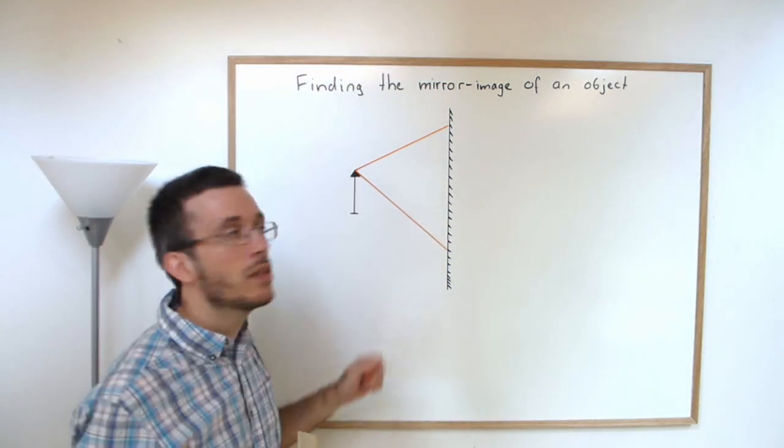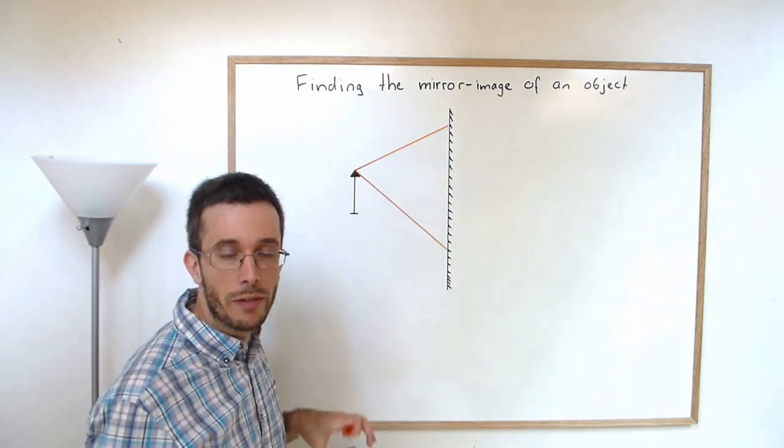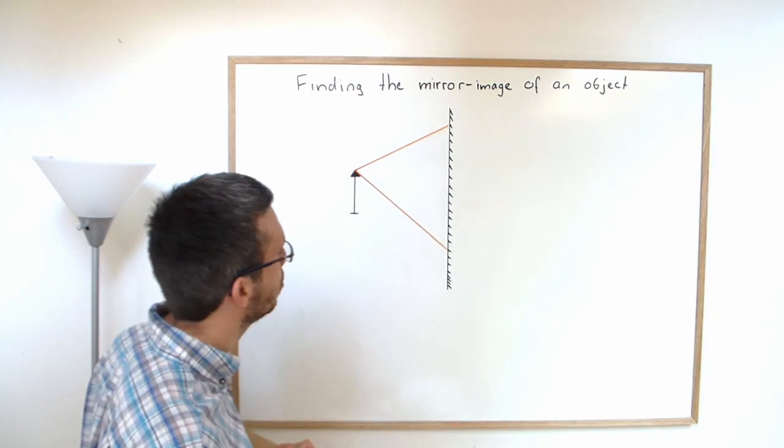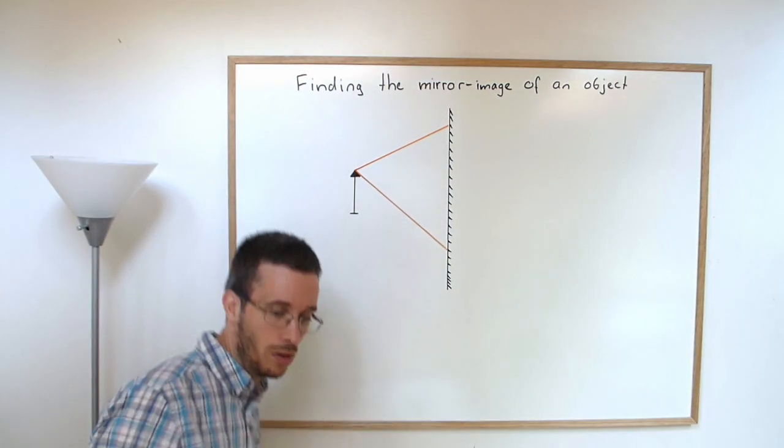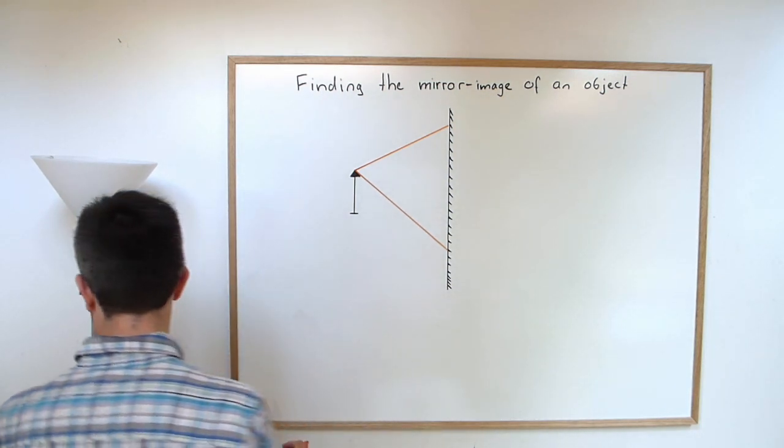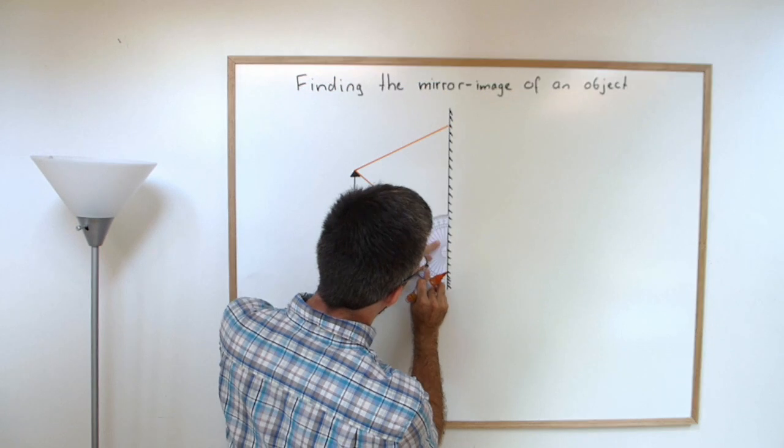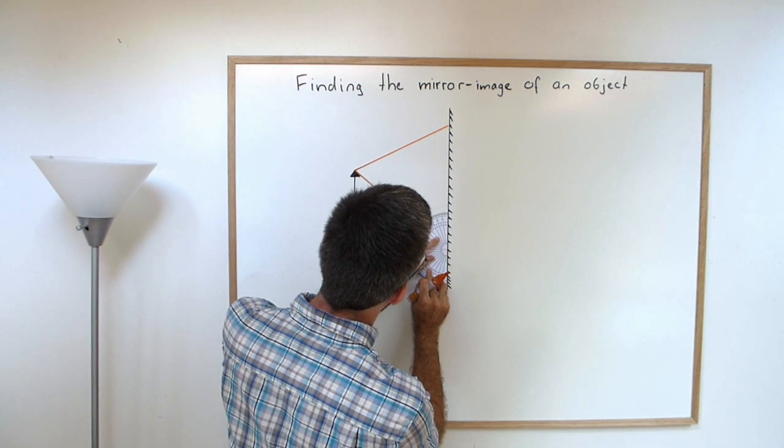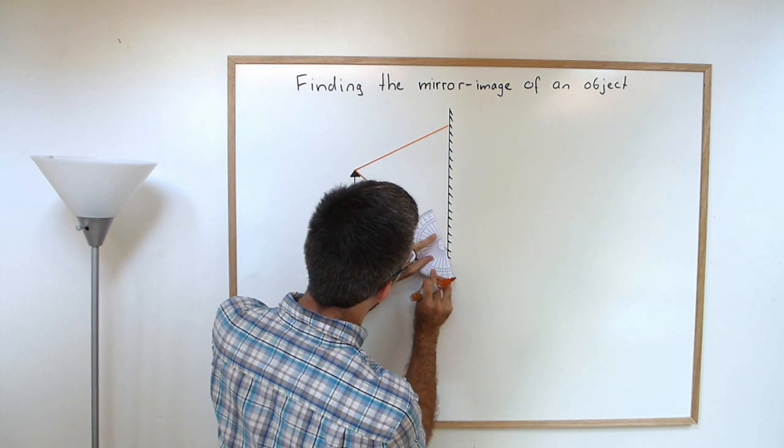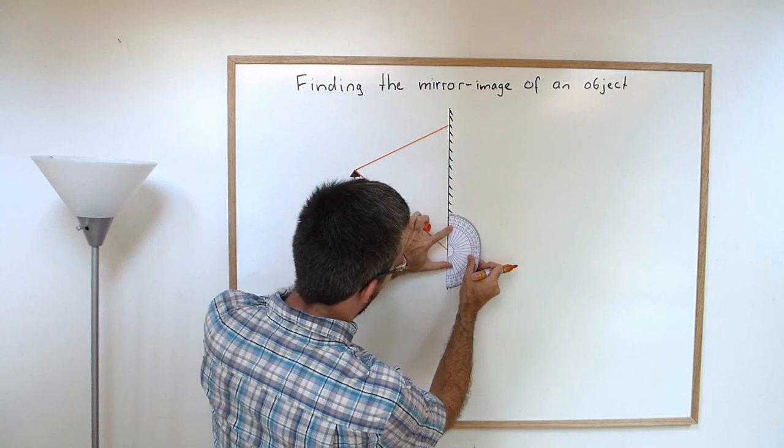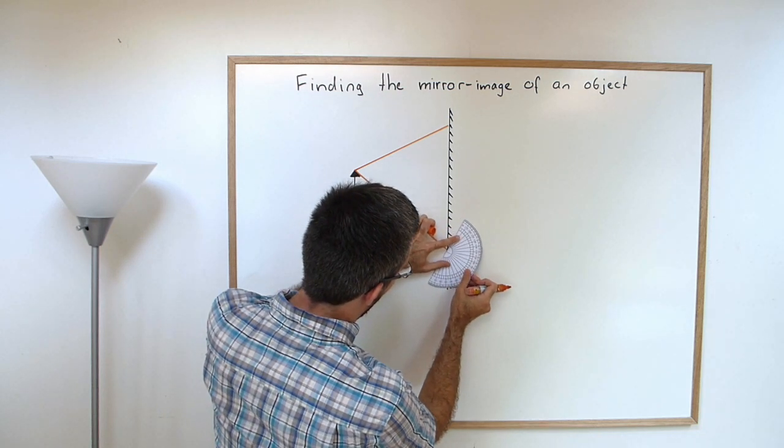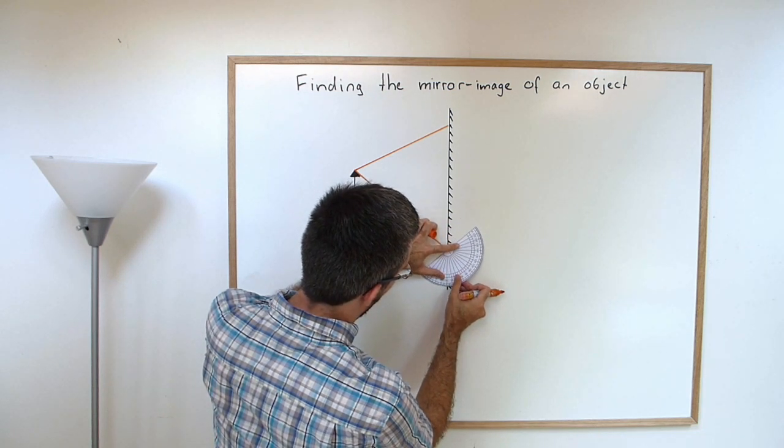For each of those rays, we need to find the reflected rays. So what we need to do is find the incoming and the outgoing angle. So here I have an incoming angle with the surface of about 51 degrees. So my outgoing angle should also be around 51 degrees.